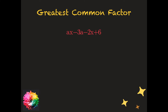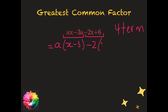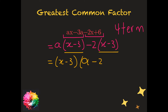For our third example, I made up a question because there wasn't much factoring by grouping in the review. Whenever you have four terms, think of grouping them and factoring that way. I group the first two terms and the last two terms. In ax − 3a, the GCF is a, leaving (x − 3). In −2x + 6, the GCF is −2, also leaving (x − 3). Now I have a common binomial factor (x − 3), so the final answer is (x − 3)(a − 2).